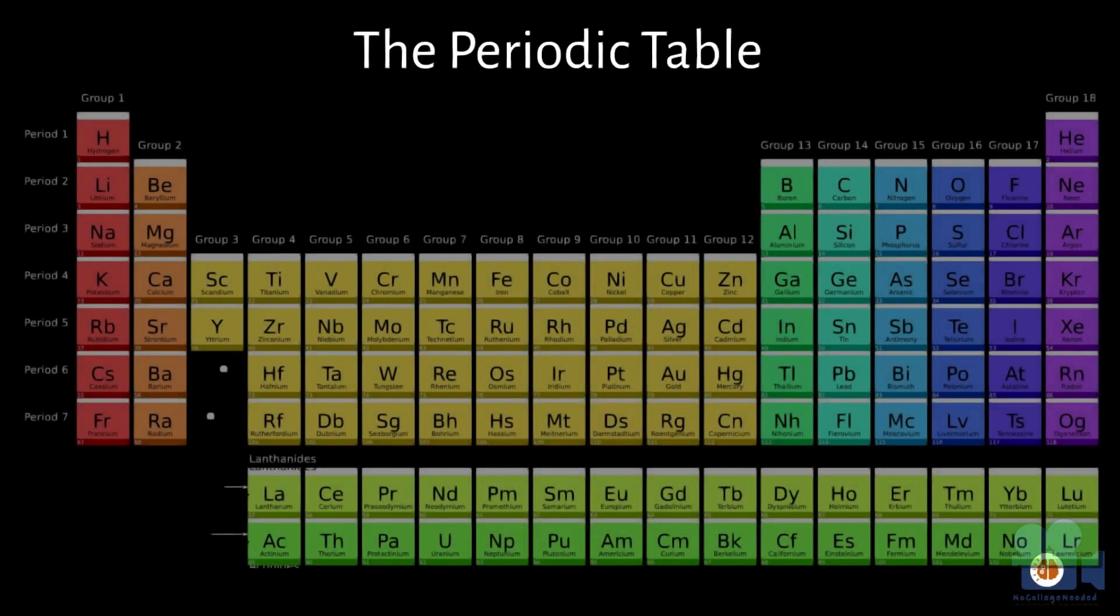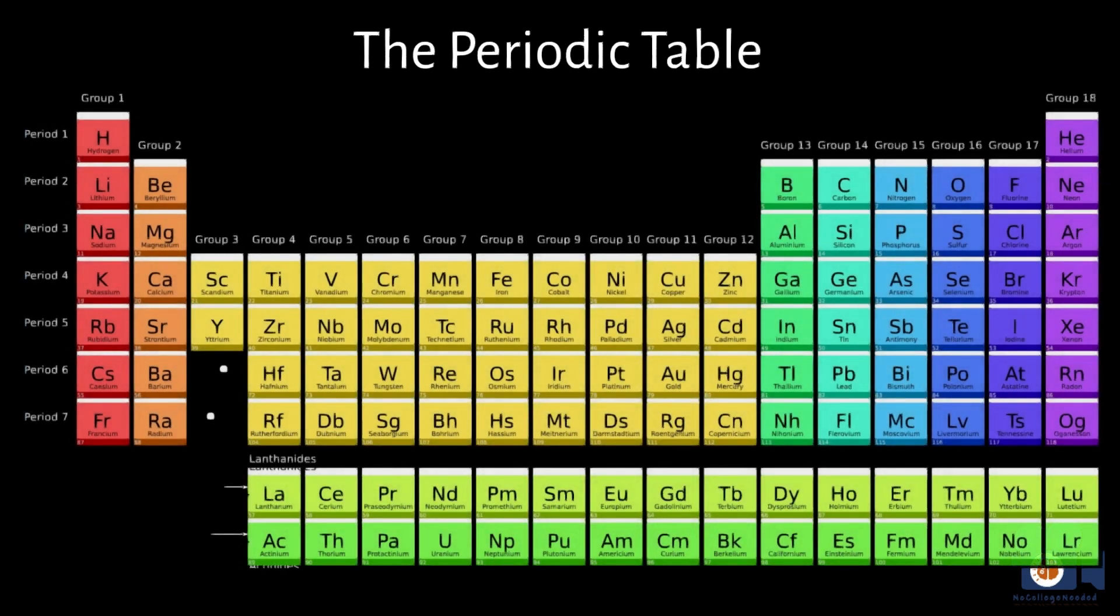The Periodic Table was developed by arranging all the known elements in order of increasing atomic number. Remember from previous units, the atomic number is the number of protons in an atom's nucleus, and this is what determines an element's chemical properties.